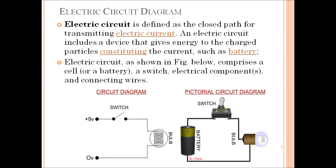An electric circuit is defined as the closed path for transmitting electric current. It consists of various electrical components. In the given circuit, a battery provides energy so that electric charge can move in a conducting wire. It also consists of a switch whose function is to make or break the circuit. If the switch is closed, the bulb starts glowing; if the switch is open, the bulb does not glow.